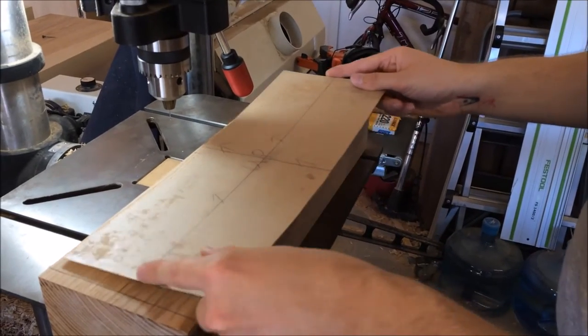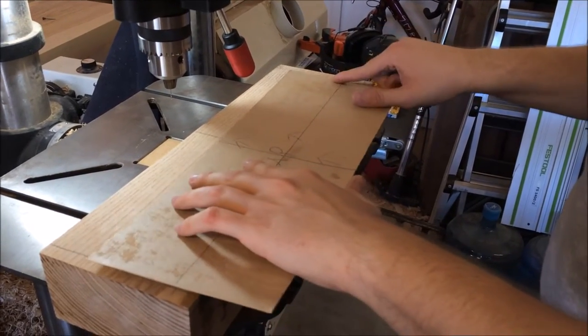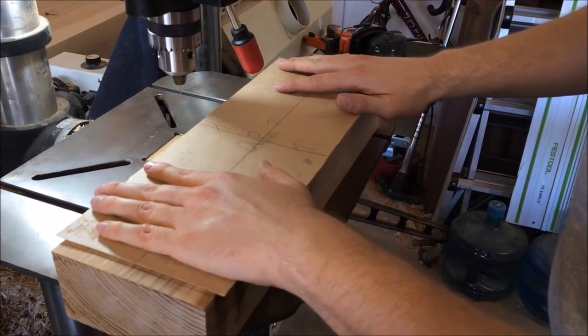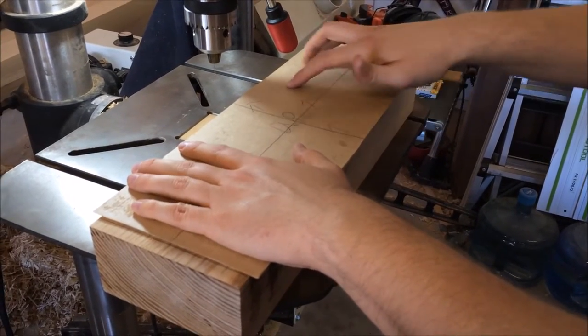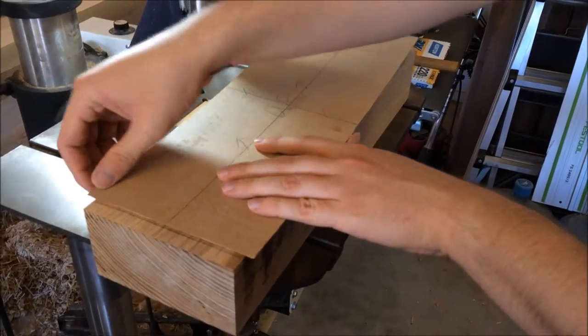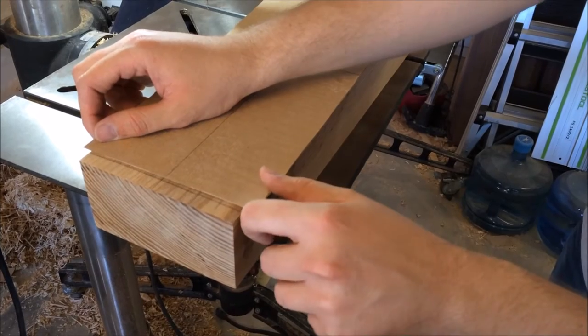These all line up and match. The lines on the edges help me place the panel accurately. As you can see, this panel overlaps the block, which is what I wanted.